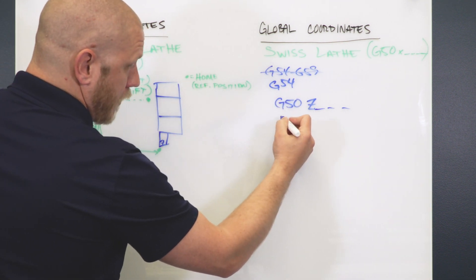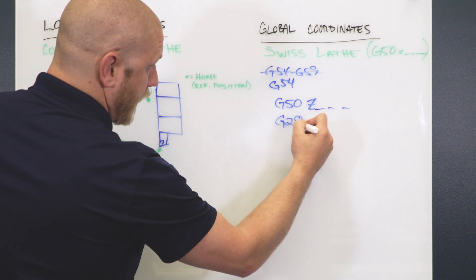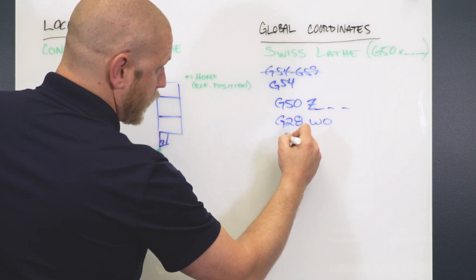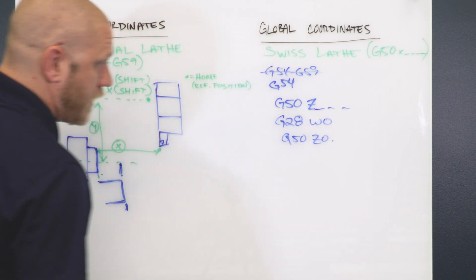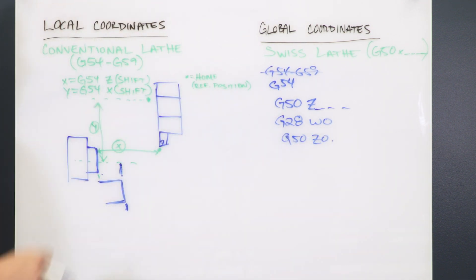When you're done at the end of the program, you would send it home, G28, W0, and then you can G50 shift Z0 and it resets to the actual machine position.